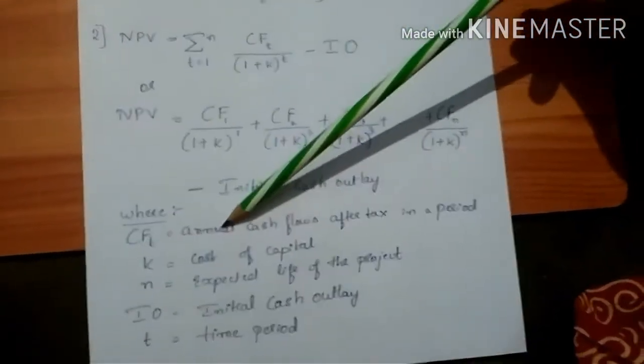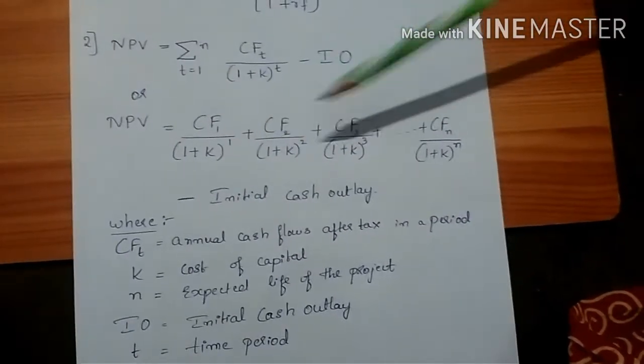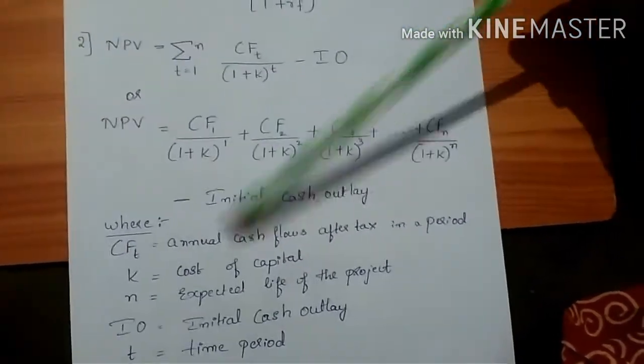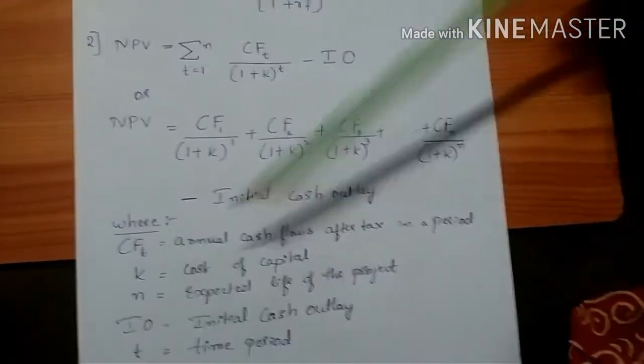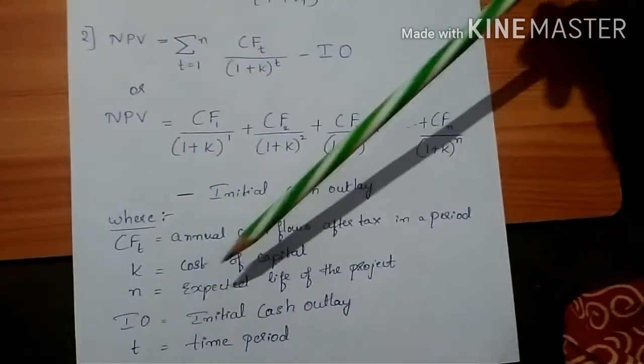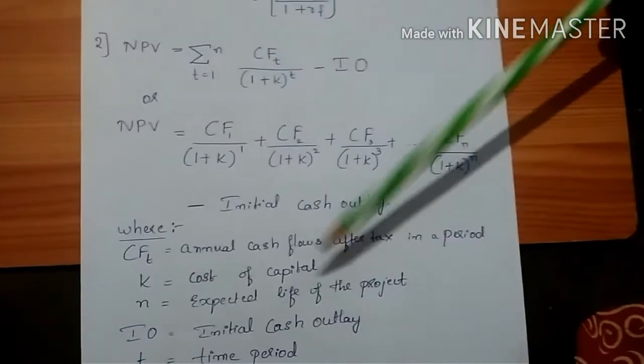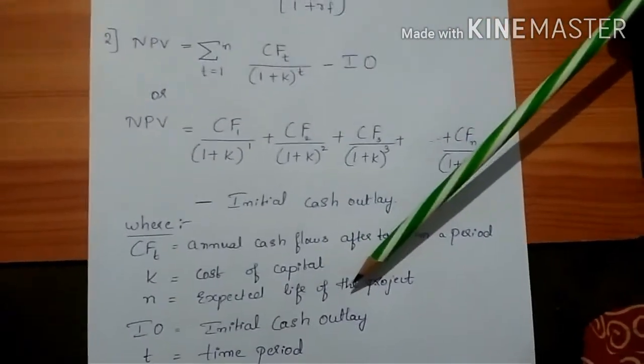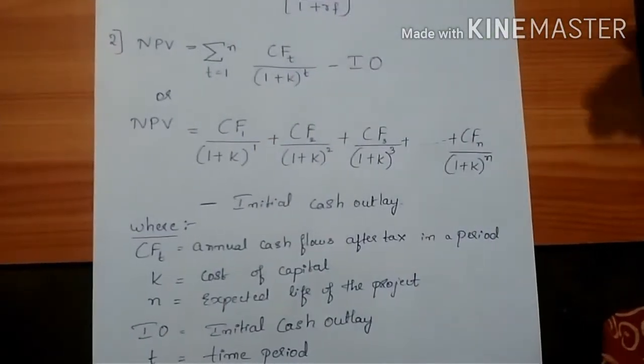Here CF1, 2, 3 represents the time period. CF means annual cash flows after tax in a period. K means cost of capital, and N is expected life of the project. I0 represents initial cash outlay of the project, and T represents time period. This is the second step.